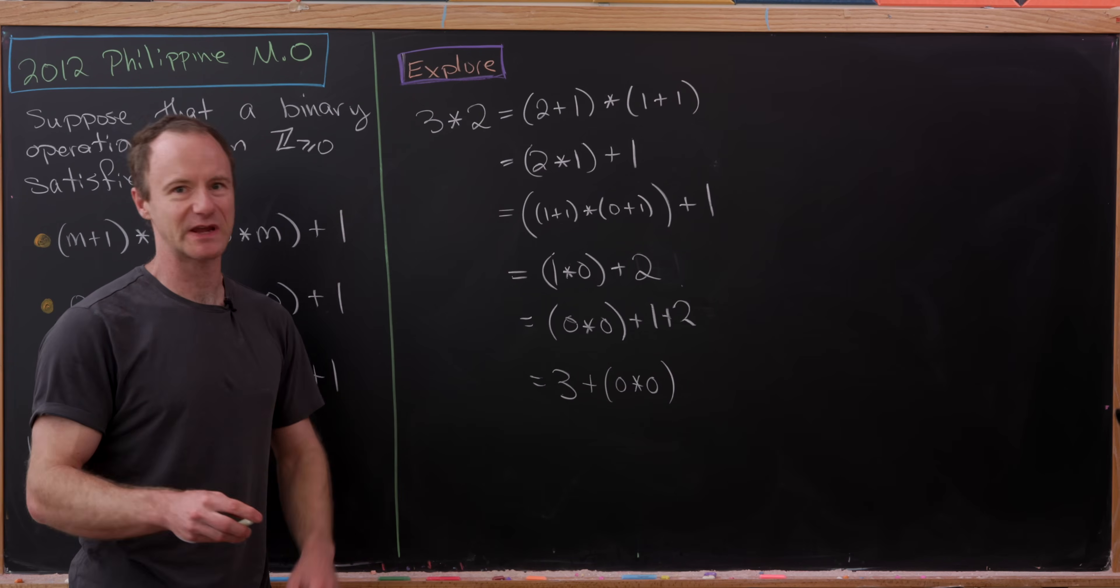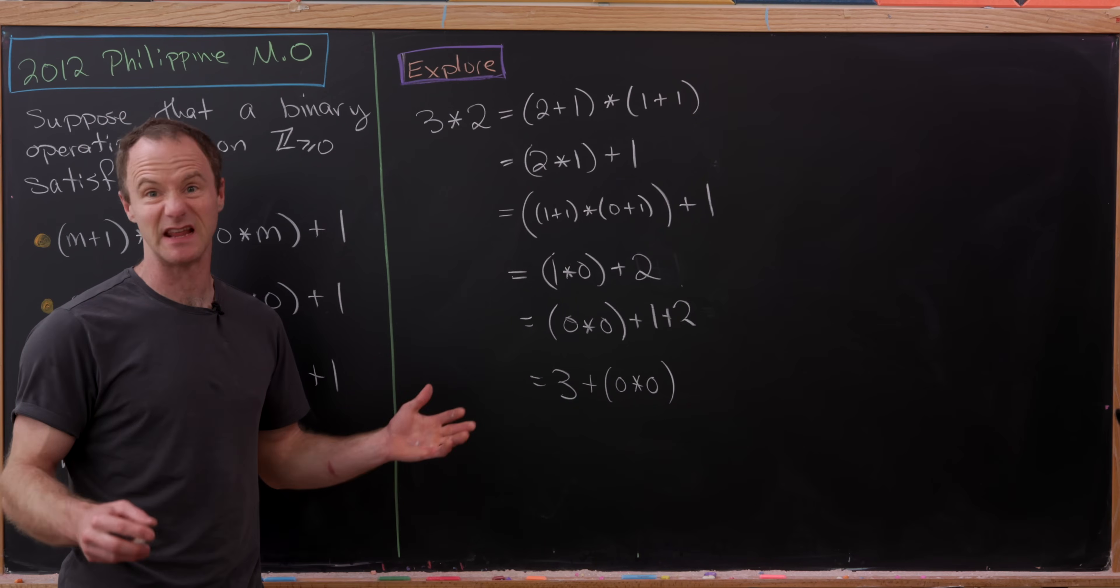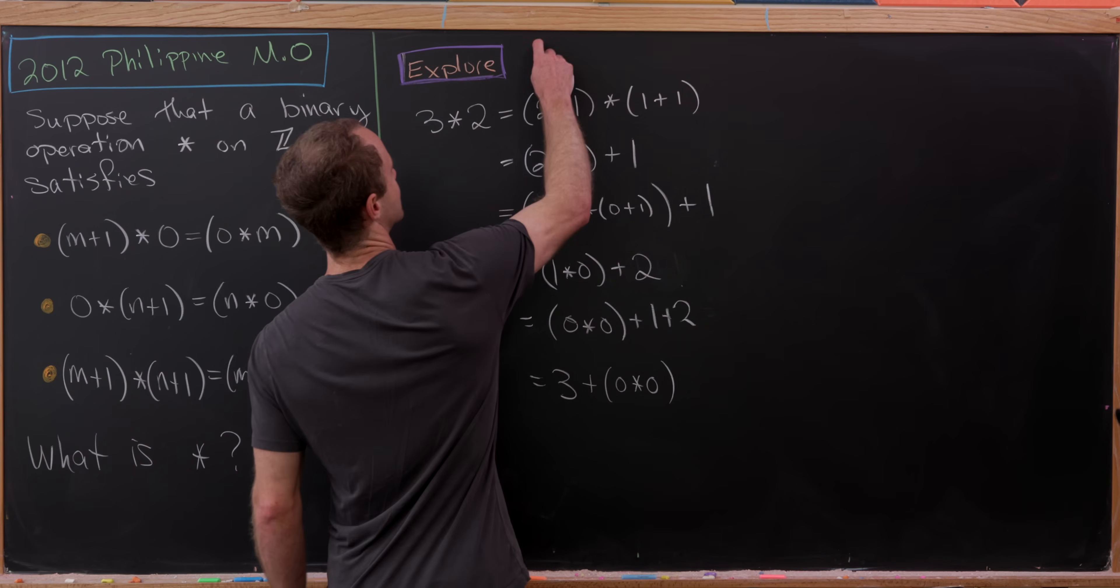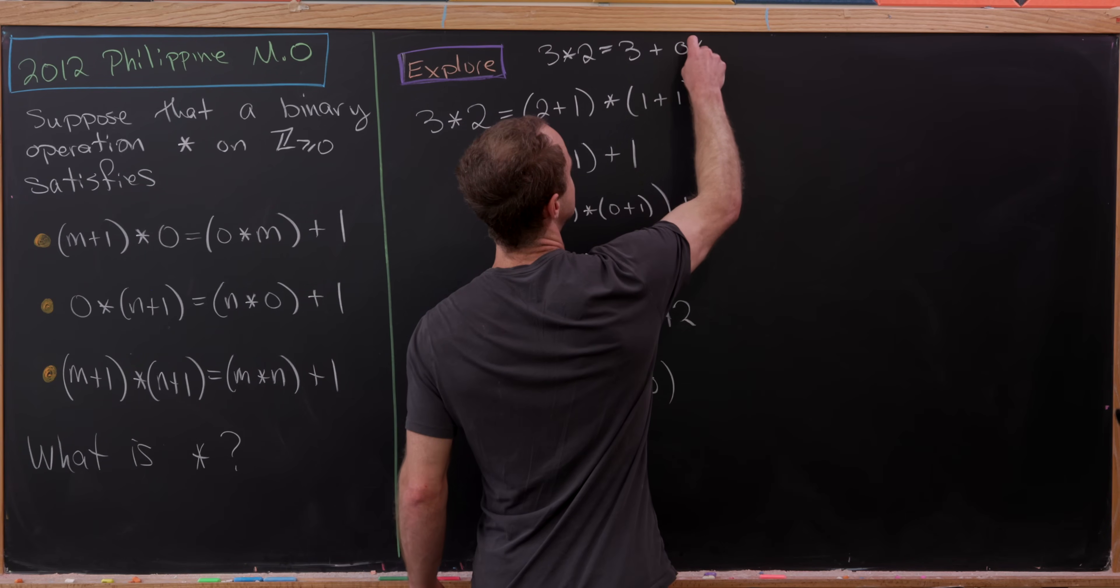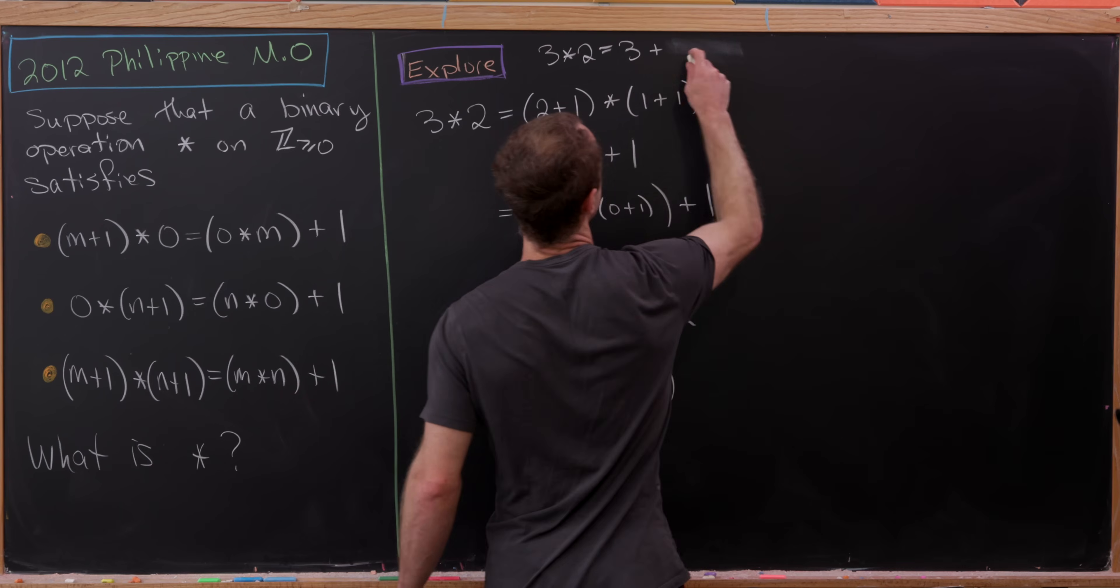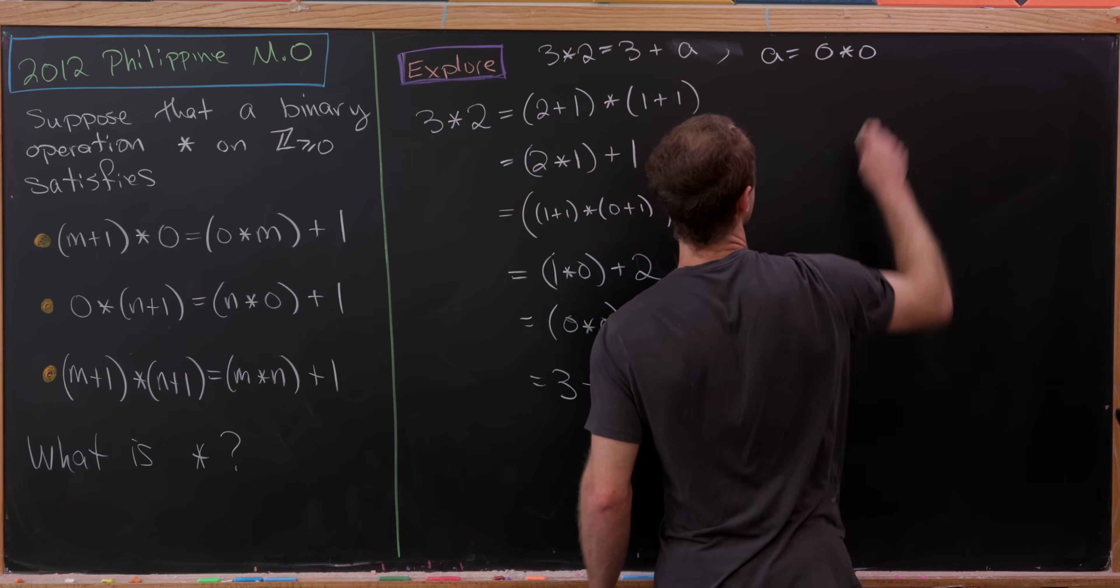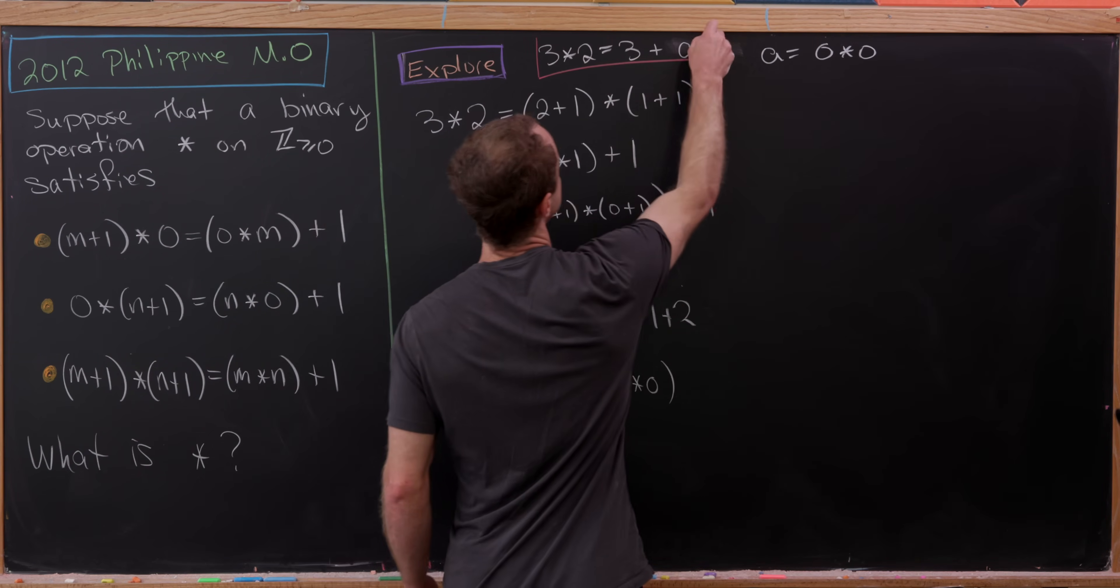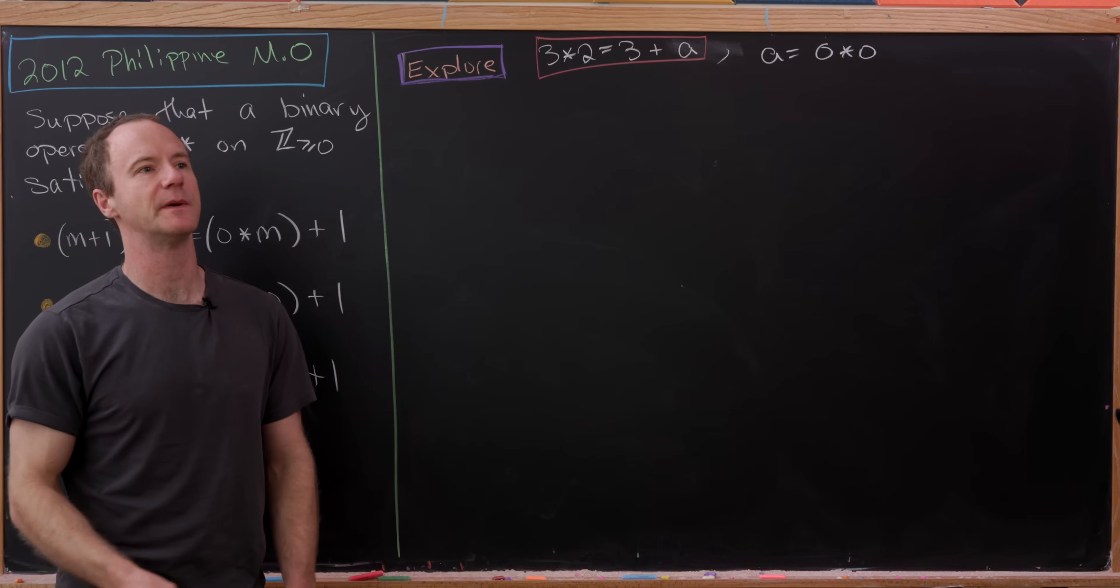Now we can apply this rule here. We'll view this number 1 as 0+1. That'll give us 0 star 0 + 1 + 2, or in other words, this equals 3 + 0 star 0. But we can't descend 0 star 0 down anymore. Perhaps that's something we can't figure out. Let's collect this at the top. We have 3 star 2 equals 3 + a, where a equals 0 star 0. Let's put a box around this and do another example.